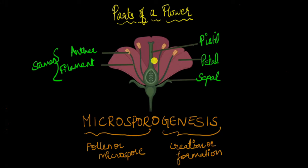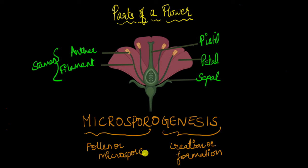The flower is not just an ornamental part of the plant — it performs an important function in angiosperms. It contains the male and female reproductive structures which produce the gametes. In flowering plants, the male reproductive structure is called the stamen and the female is called the pistil. The process by which pollen grains or microspores are formed is called microsporogenesis.